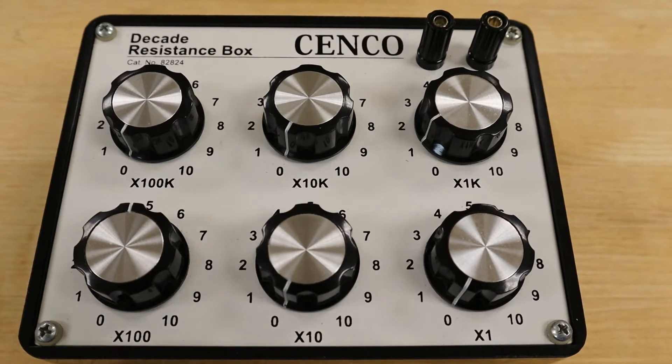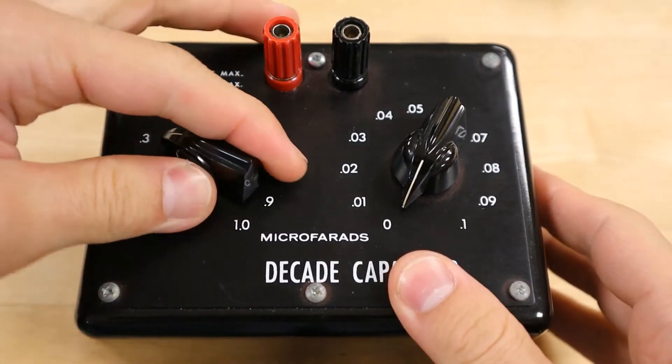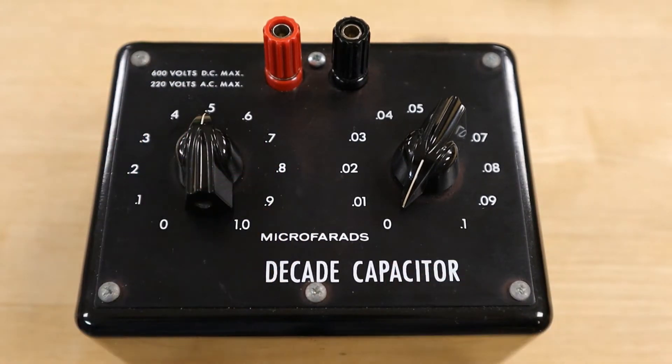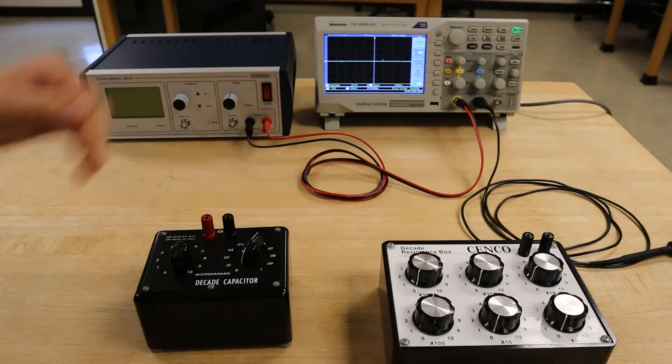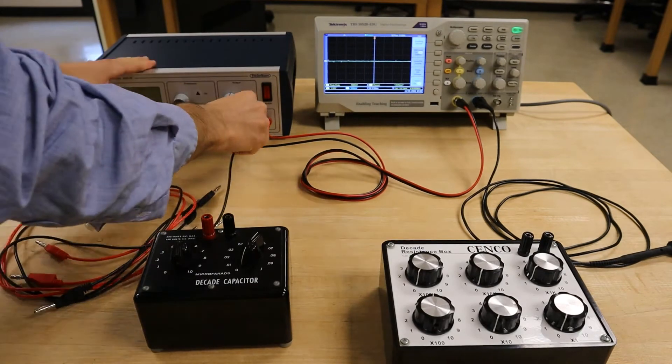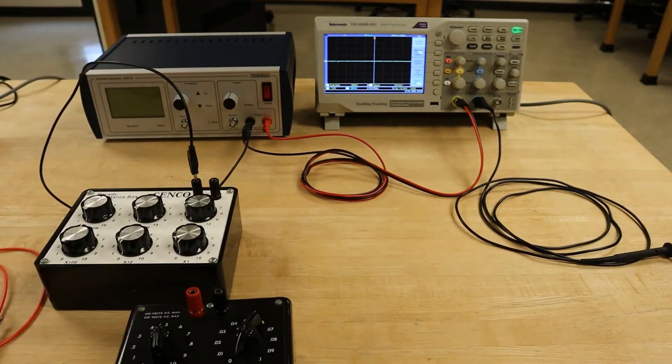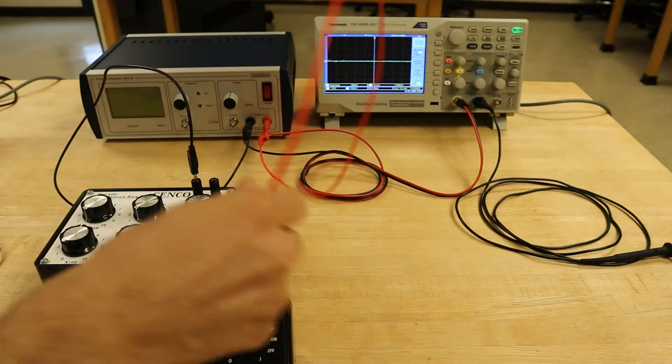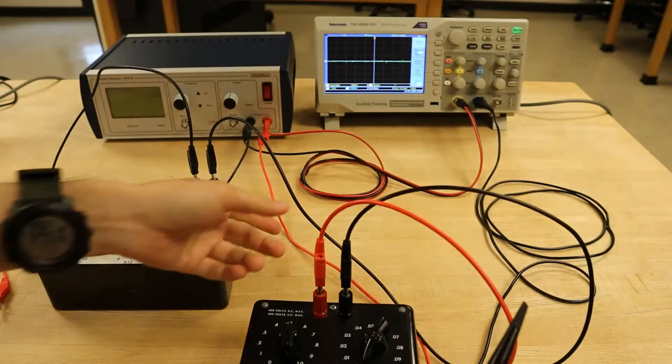The decade capacitor works in the same way, and we'll set this component to 0.5 microfarads. These components are then joined to each other and the function generator using banana cables, with the attenuator probe placed somewhere on the wire that connects the capacitor and resistor.